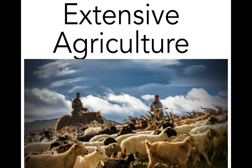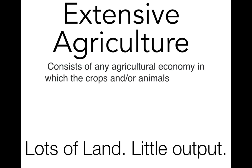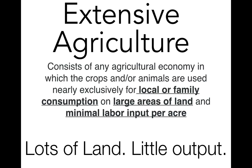Both of these types of agriculture are called extensive agriculture. Extensive agriculture consists of any agricultural economy in which the crops and/or animals are used nearly exclusively for local or family consumption — subsistence — on large areas of land with minimal labor input per acre. In other words, lots of land and little output.